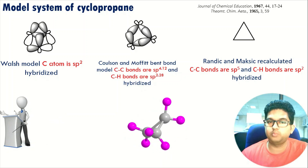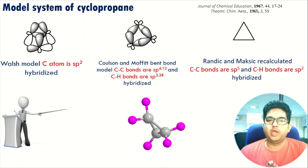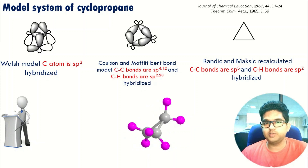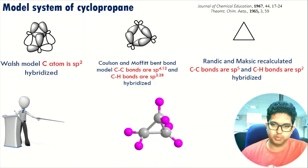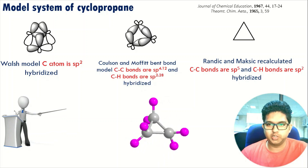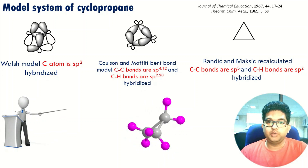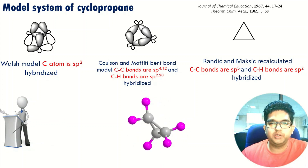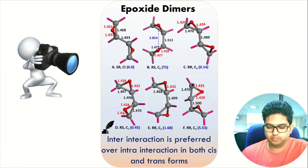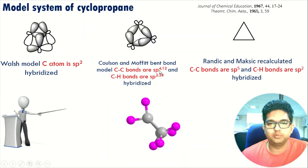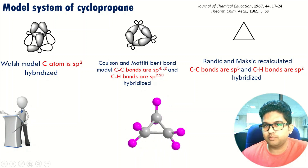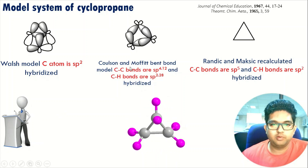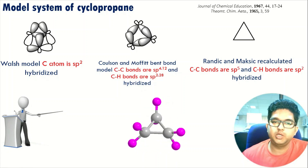The next model is the Coulson and Moffitt model, which talks for the first time about the bent bond or banana bond. In this model, he talks about isovalent hybridization. What is isovalent hybridization? Generally we have sp2, sp3, and sp3d hybridization. But if we have hybridization in the form of a fraction — for example, the CC bond hybridization here is sp4.12 — then we call that isovalent hybridization. So the Coulson and Moffitt bent bond model talks about isovalent hybridization.